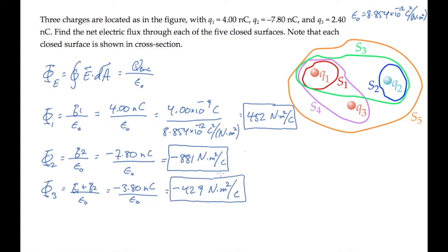Surface four is the purple one. It encloses charge q1 and q3. Those are both positive. So when we add them together and divide by epsilon naught, we find this electric flux.